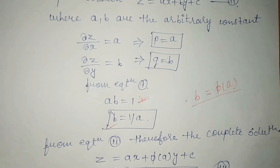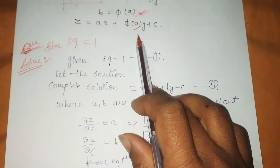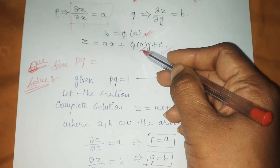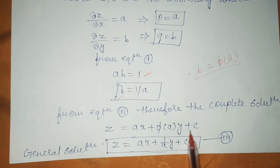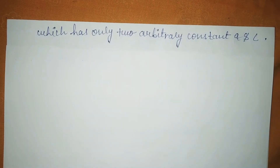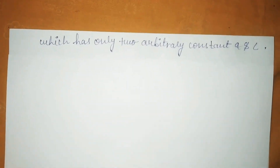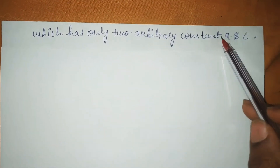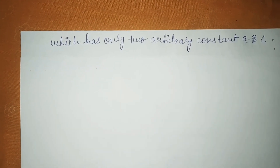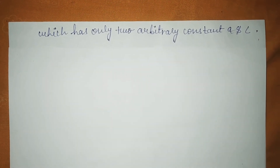From AB = 1, we transfer A to get B = 1/A. That is your φ(A) value. From equation 2 (the standard form z = ax + by + c), we substitute φ(A) = 1/A in place of b. Therefore the complete solution is z = ax + (1/a)y + c. This has only two arbitrary constants, A and C, completing the first standard form.